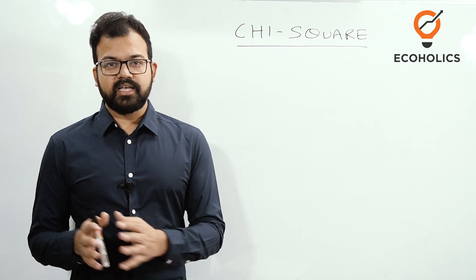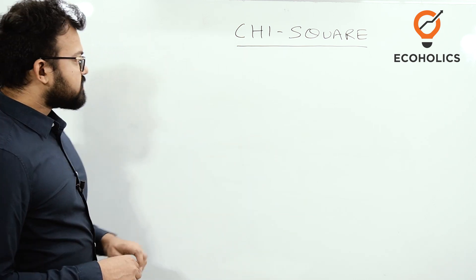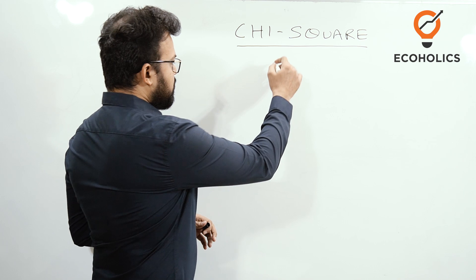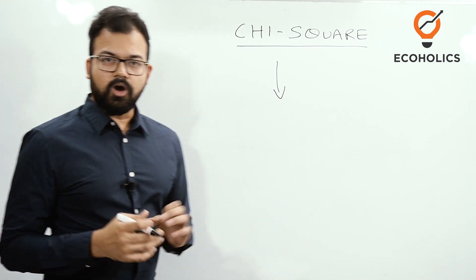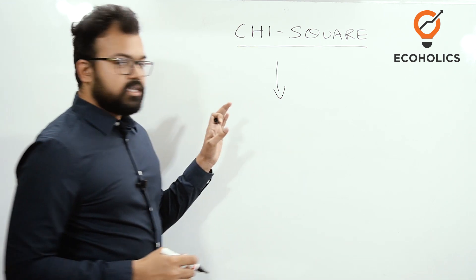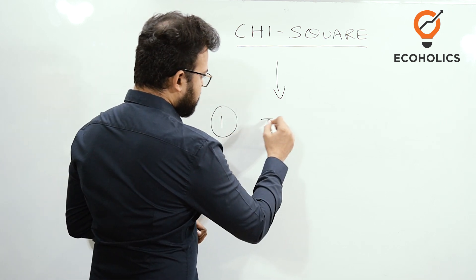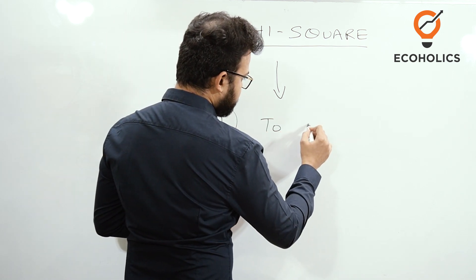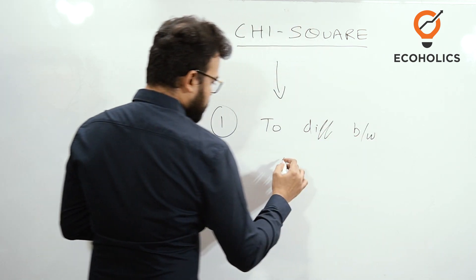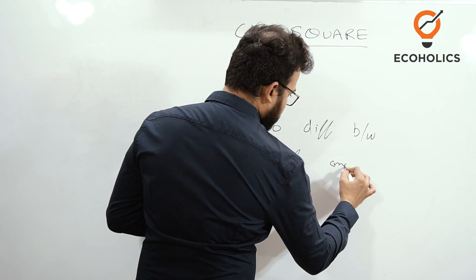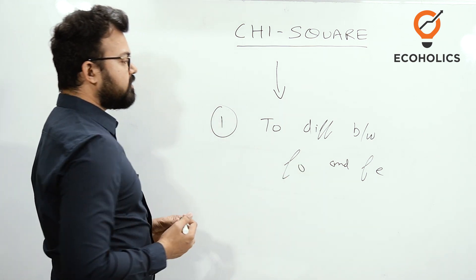Let's start with chi-square. First of all, why is it important? We need to see the difference between observed and expected frequency. We generally use chi-square for three things. The first is to determine the difference between f0 and fe, where f0 is observed frequency.